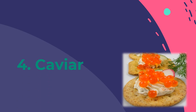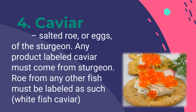Caviar consists of salted roe or eggs of the sturgeon — a kind of fish. Any product labeled caviar must come from sturgeon; roe from any other fish must be labeled accordingly. Caviar is considered a delicacy eaten as a garnish or spread. The roe can be fresh or pasteurized, with pasteurization reducing its culinary and economic value. Caviar has a special texture — the eggs pop gently in your mouth, releasing a delicate mixture of salt, fish, umami, and a slight mineral taste.